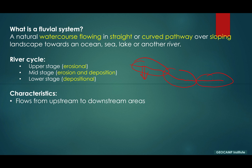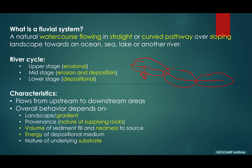Overall, flow occurs from the upstream or topographically higher area down to the downstream areas, which are generally lower in elevation. The behavior of each fluvial system depends on the gradients, the nature of the supplying rocks, the volume of sediments and proximity to source, the energy of the medium, as well as the nature of the underlying rock.